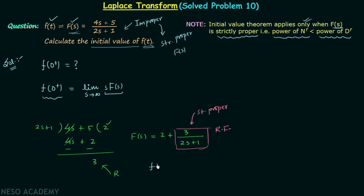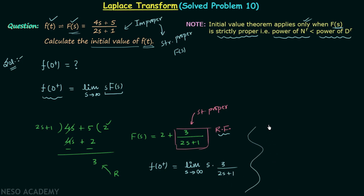We write our initial value F(0+) as the limit as S tends to infinity of S multiplied by the remainder function, which is 3/(2s + 1). Taking S common in the denominator, we get the limit of S multiplied by 3 divided by S times (2 + 1/S).